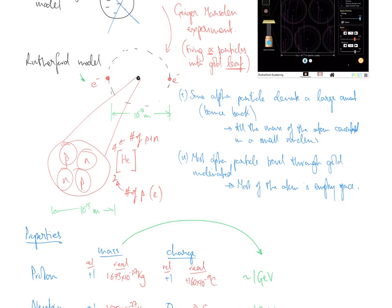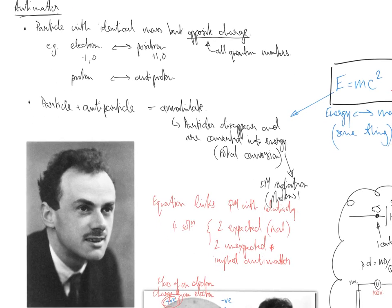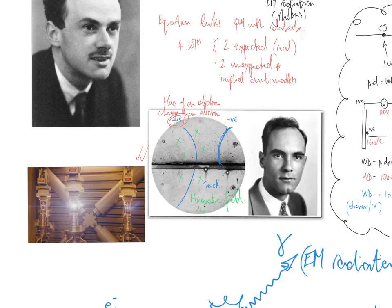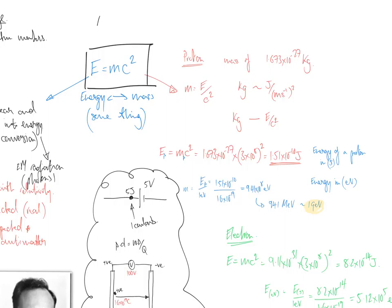And these ranges as well they're really important: 10 to the minus 10 versus 10 to the minus 15 versus indeed I suppose 10 to the minus 18 meters, we think that's point-like, the electron. Then we talked about the properties of each of those: relative masses, relative charges because that's what we remember from GCSE, but then the real values.